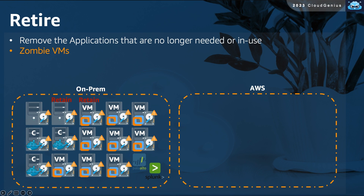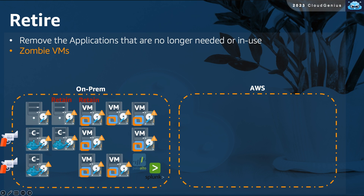There is a market term used to describe these inactive machines and servers — they are called zombie VMs. Definitely, the right and wise choice here is not to migrate them. The best strategy in this case is to retire these machines. Retire means that you kill these workloads, at least power them off, or decommission and delete them. This is definitely going to be out of the scope of migration.